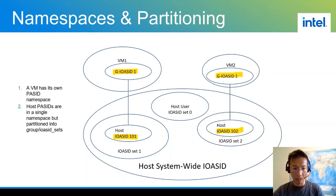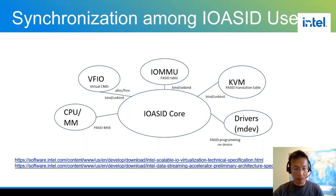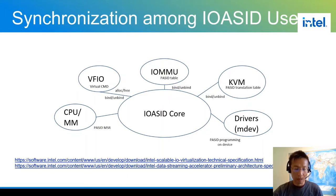In terms of sizes, VM2 has a smaller quota for the IOACID set because the system administrator may give fewer resources to VM2 versus VM1. That could depend on how many assigned devices they have or other use cases.